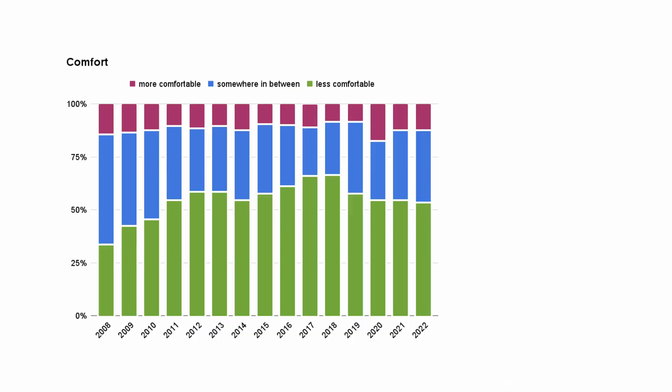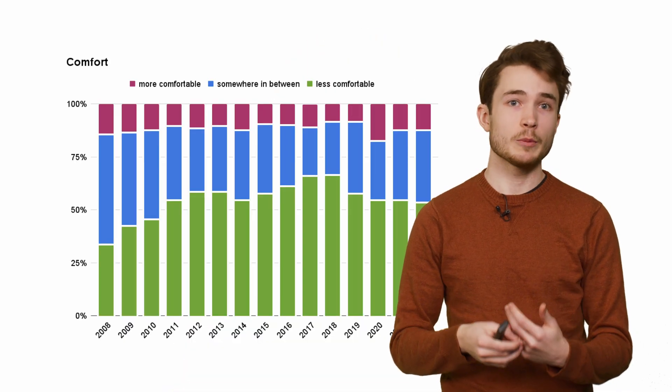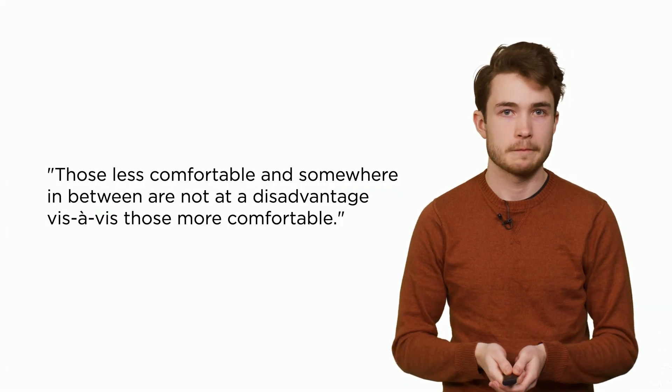One of the most important axes we've considered most recently was the axis of comfort level. At the beginning of the term, we asked students: are you among those who are less comfortable, more comfortable, or somewhere in between? We do this to make sure that those who are less comfortable aren't at a disadvantage — they can still learn all they want to learn compared to those who are more comfortable taking the very same course.